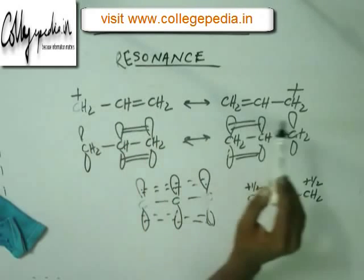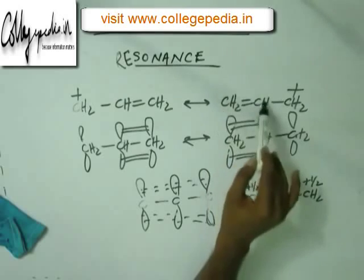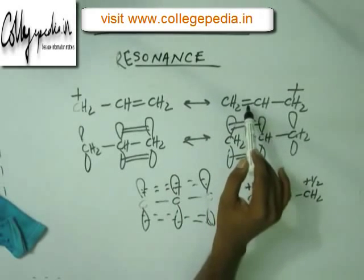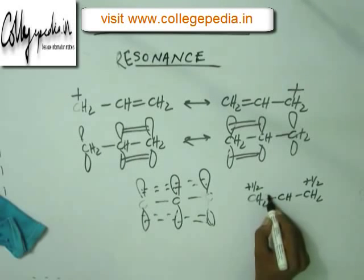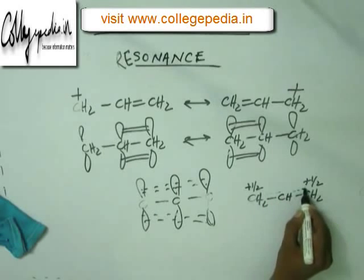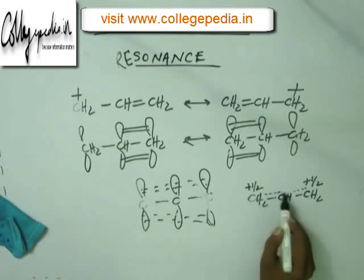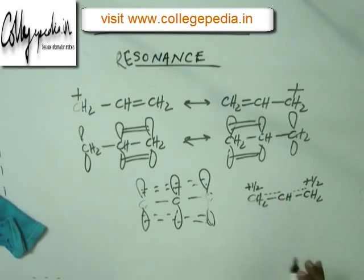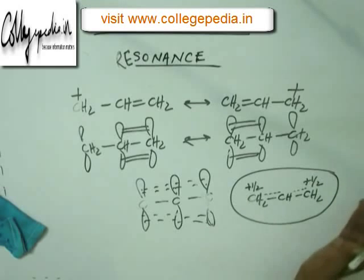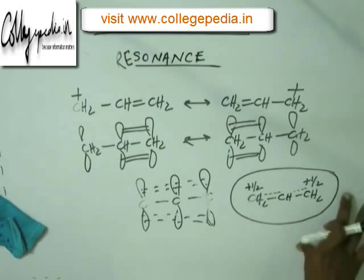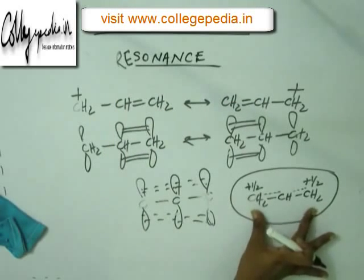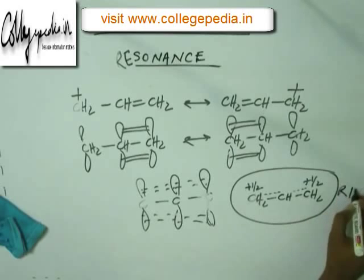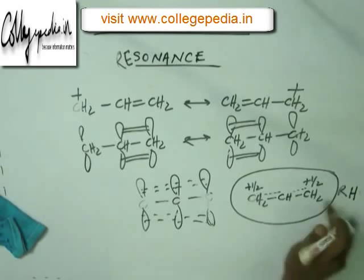The single pi bond appears between C1-C2 in one RS and between C2-C3 in the other. Since the same pi bond is shared between two positions, half the pi bond is at each location — shown as dotted lines indicating a partial bond. This is how the real structure exists: with distributed charge and distributed pi bond. This is the resonance hybrid.